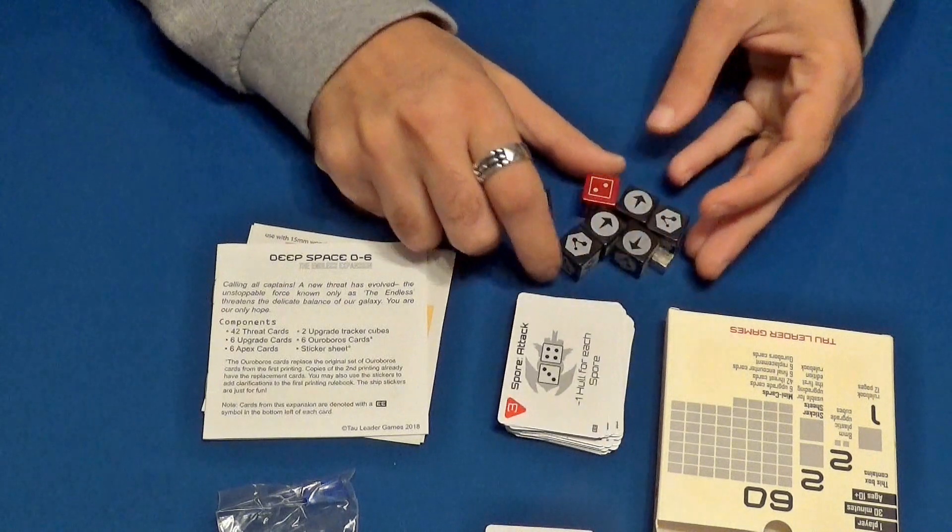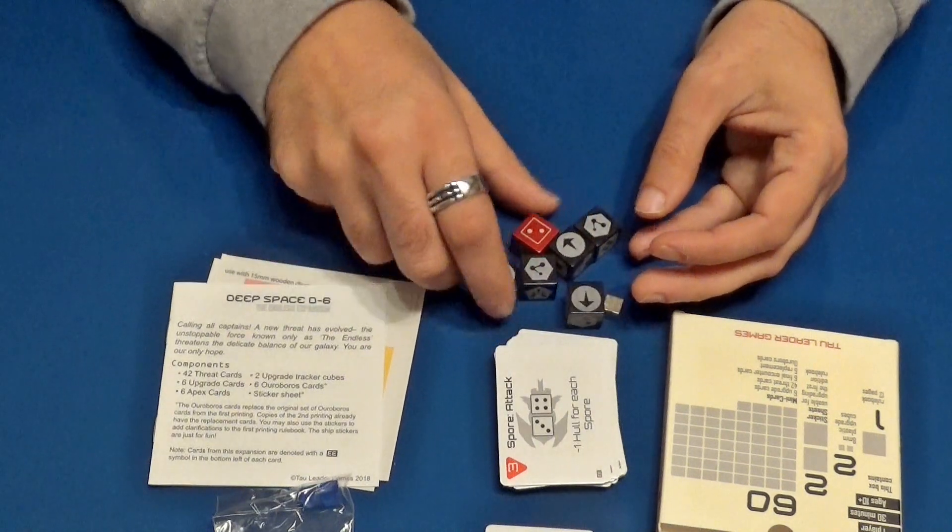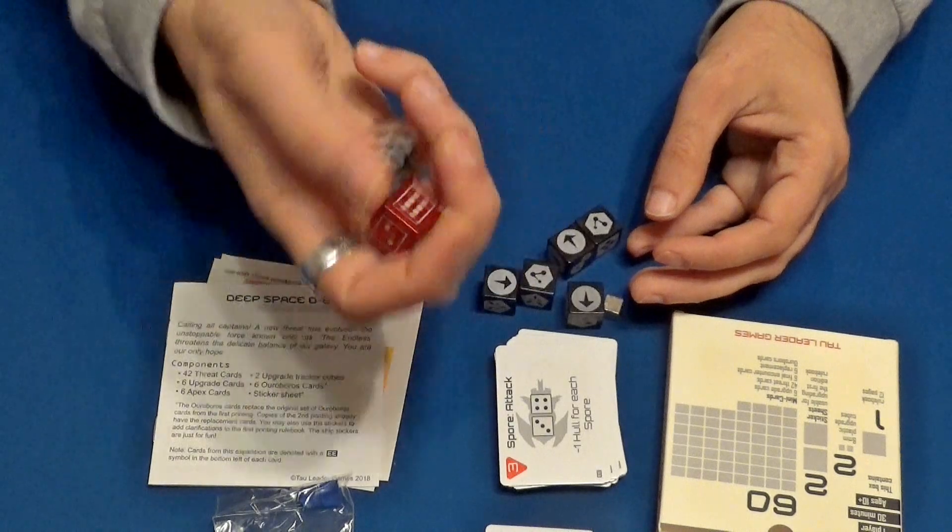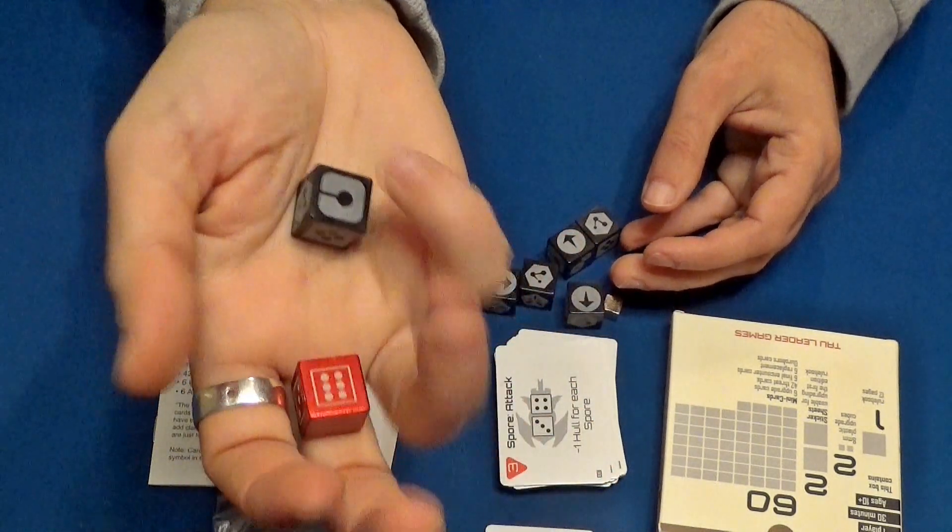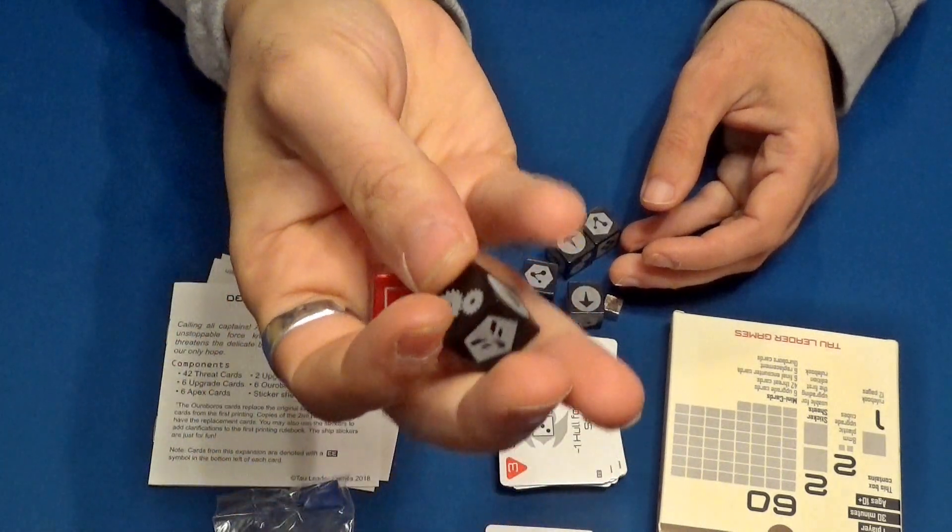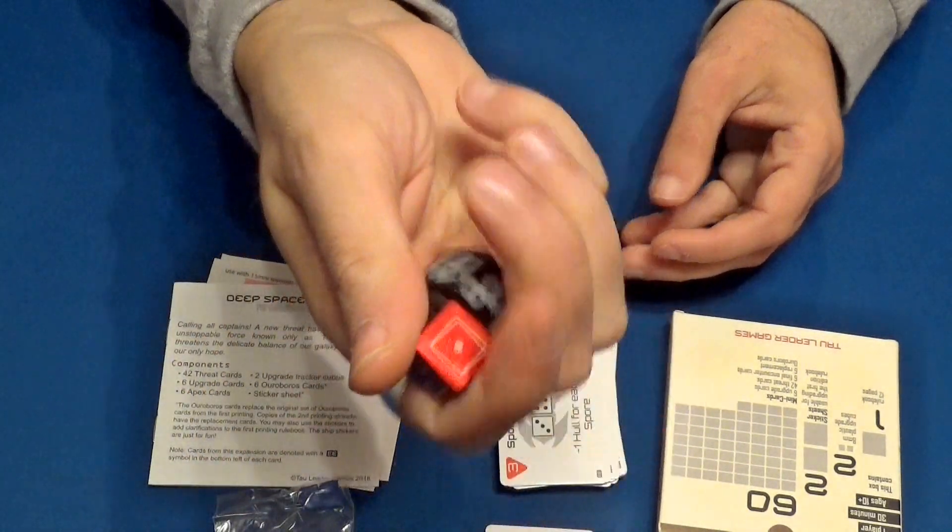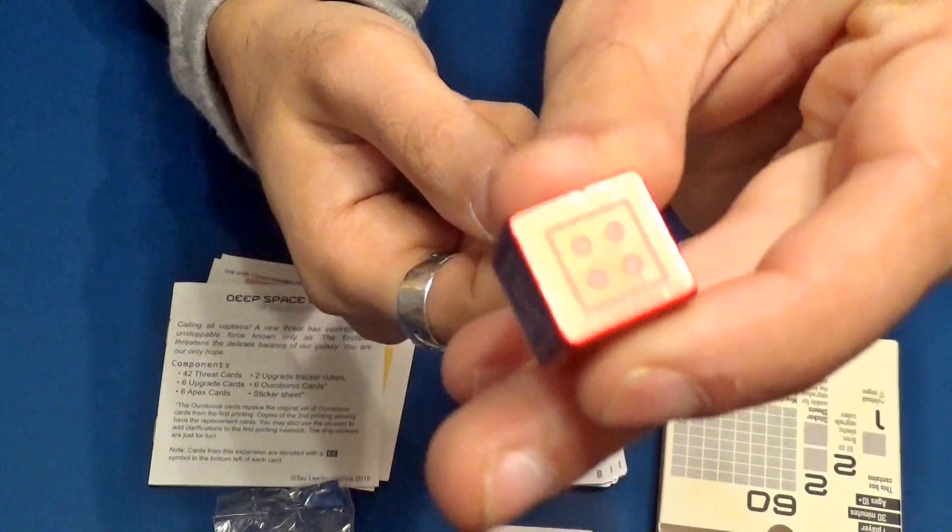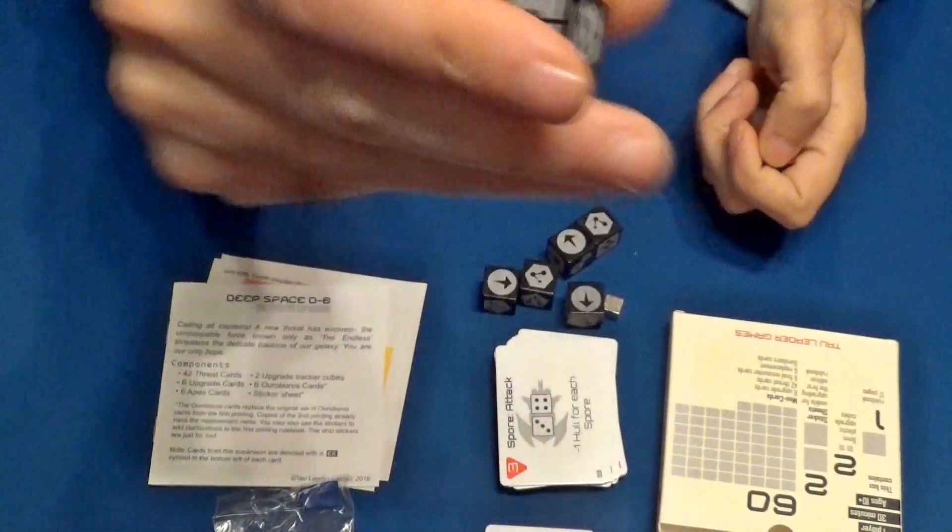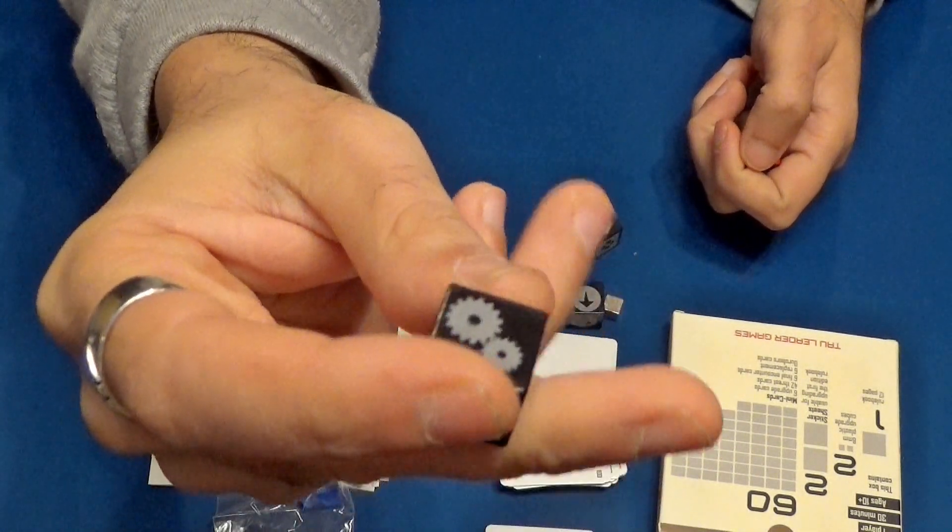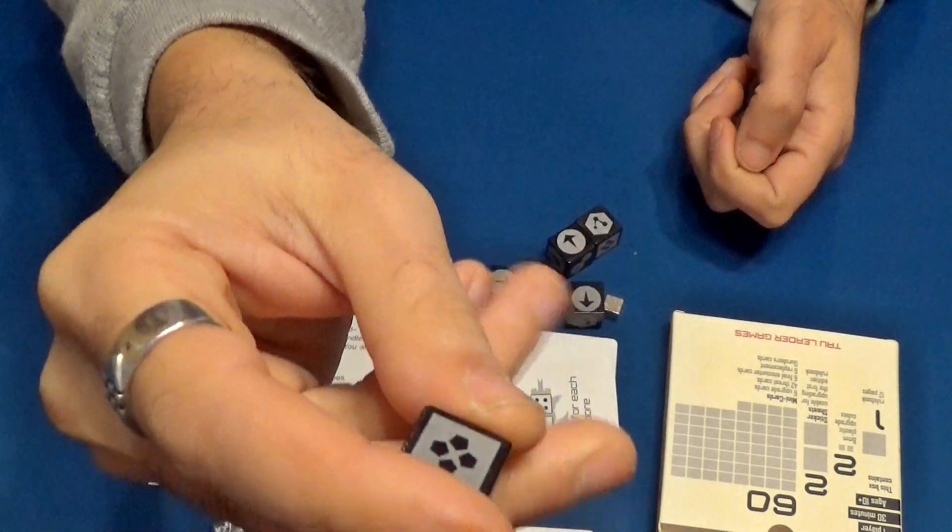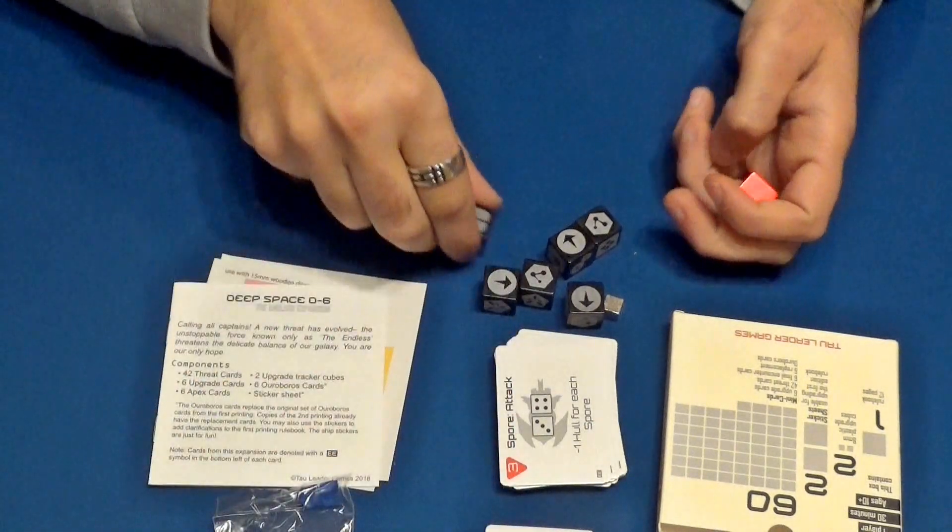Nos venían estos dados que vemos aquí, que son los mismos que teníamos en el juego base. Pero estos son como más metálicos. Que hacen que el juego sea más como un poco diferente, distinto. Tenemos aquí a un dado de los 6. Es rojo, muy chulo también. Y tenemos estos dados que indicarán los distintos sitios de la nave.